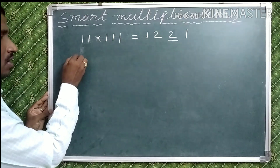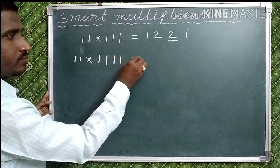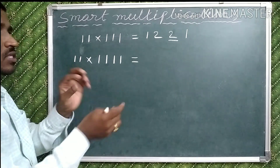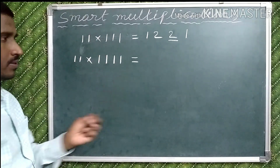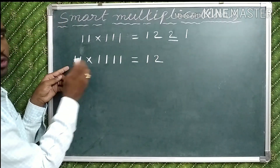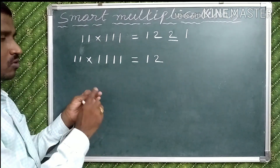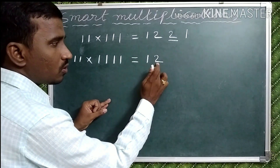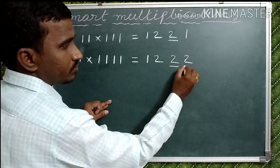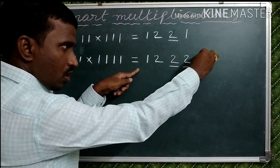Suppose 11 into 1111: here 2 ones and 4 ones. The difference in ones is 2. So write the least count sequence: 1, 2. The difference is 2, so repeat 2 two more times: 2, 2. Then write before 2 in descending order: 2, 1. That is the answer: 1, 2, 2, 2, 1.